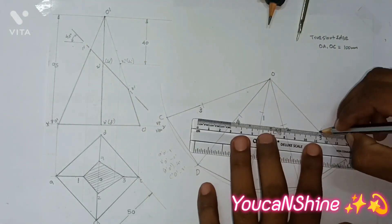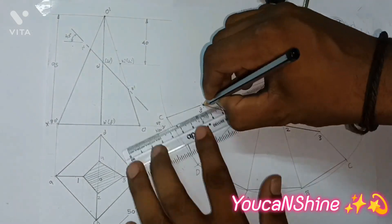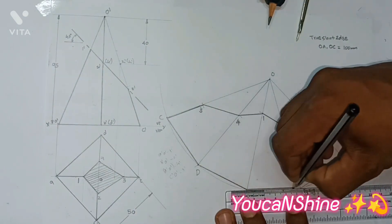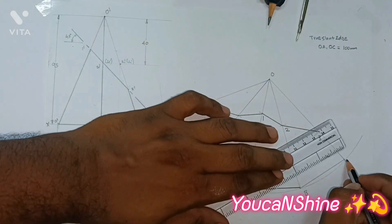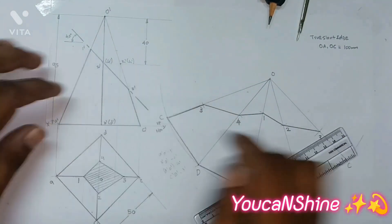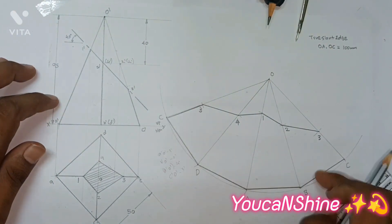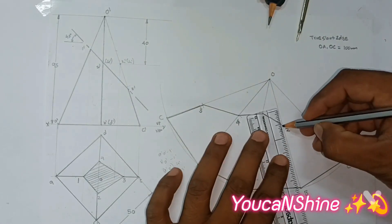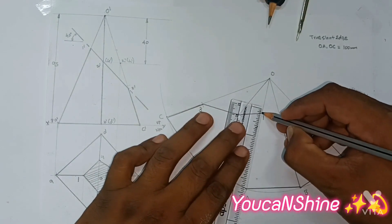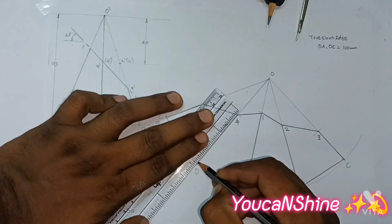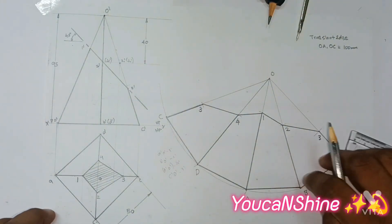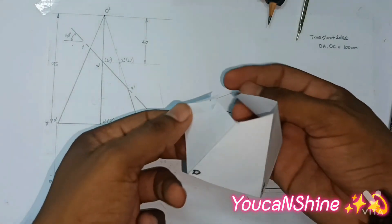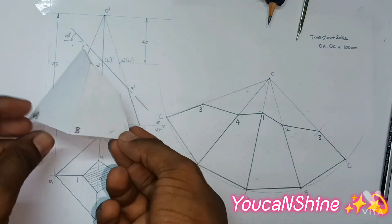Now connect all the points. The base is dark where it is cut. The remaining slant edges are dark. Put the heading and dimensions at the bottom. If you cut this and fold it, we can add the conditions and complete the development.